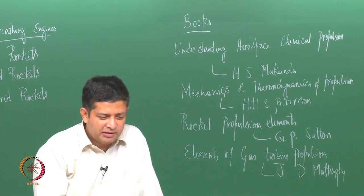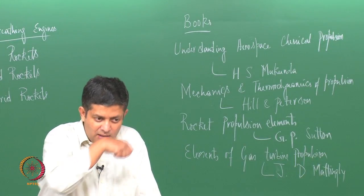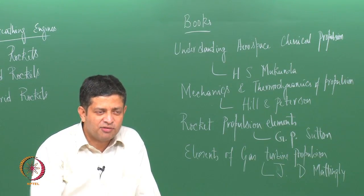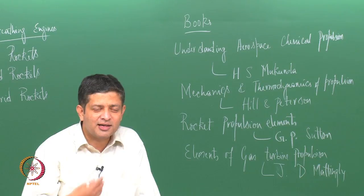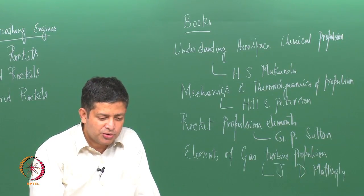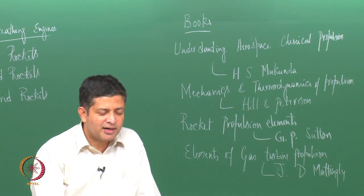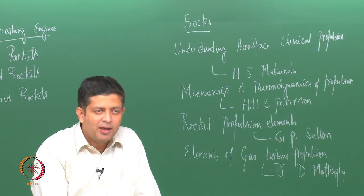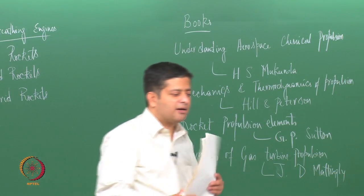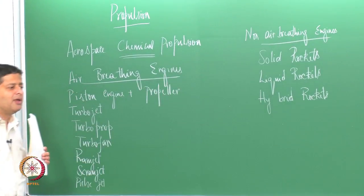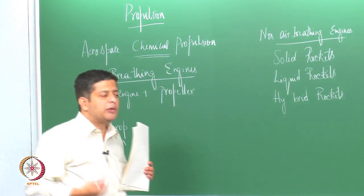Firstly we need to understand that propulsion means to move oneself forward, to move oneself from one place to another — that is, to propel oneself. You need energy to do that and you need a system to take care of this, and that is what a propulsion system is. As we have described, there are two kinds of systems: air breathing engines and non-air breathing engines. Let us firstly look at when do we use which one.